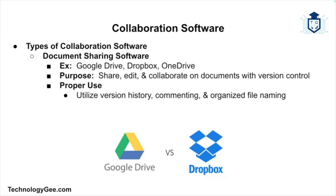Document sharing tools are used for file storage and sharing, enabling multiple users to access, edit, and collaborate on documents simultaneously. They provide version control, ensuring users can see changes made by others and revert to previous versions if needed. Use document sharing tools to collaborate on documents, especially when multiple stakeholders need to contribute. Take advantage of version history and commenting features to track changes and provide feedback. Ensure files are organized and appropriately named to avoid confusion, and set permissions carefully to control who has access to the information.